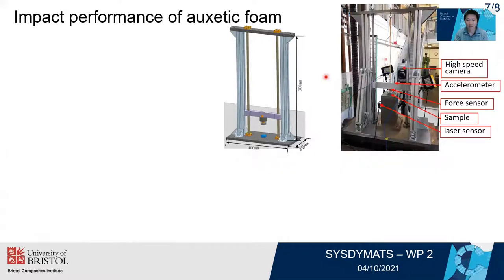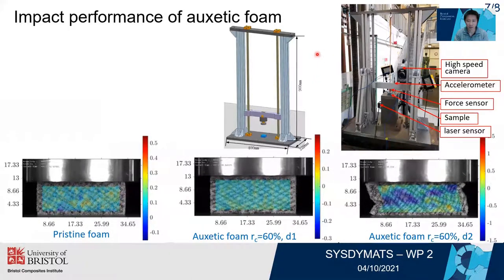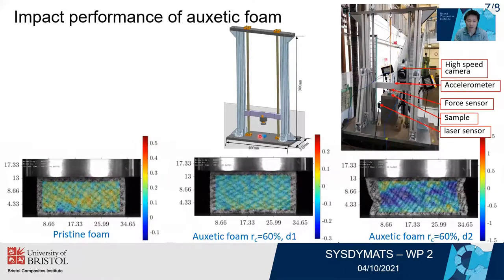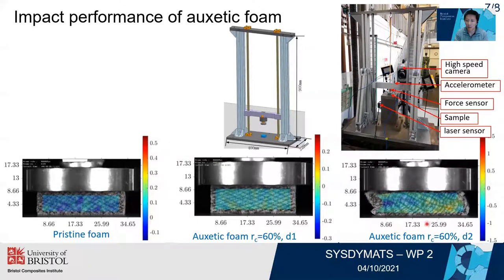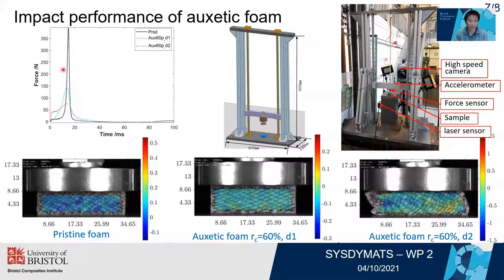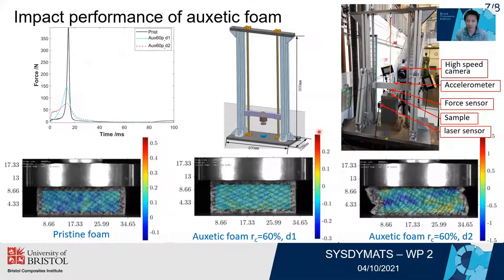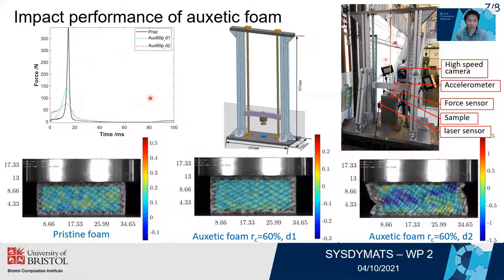Finally, we built a small drop tower rig to measure the impact performance of this kind of soft porous auxetic material. The left one is the conventional foam. The middle one is the auxetic foam impacted along the thermoforming direction, which shows the zero Poisson's ratio phenomenon. The right one is the auxetic foam impacted along the lateral direction, which shows strong auxetic behavior. From the force curve, it is found that the auxetic foam — especially when impacted along the lateral direction — shows the most significant reduction in force, which is good for impact protection.